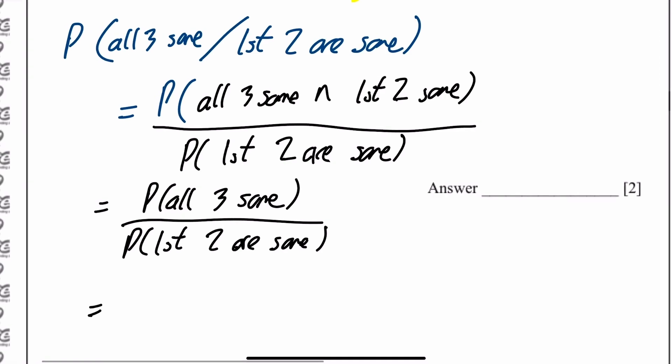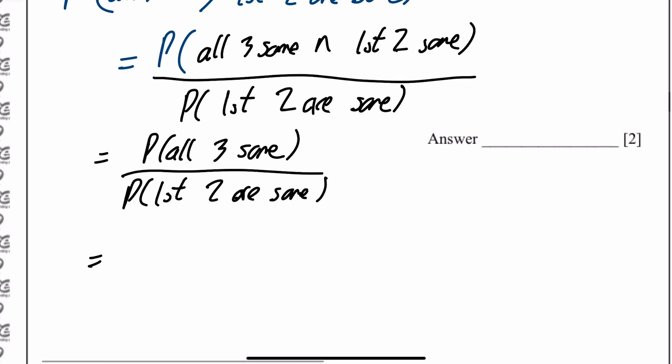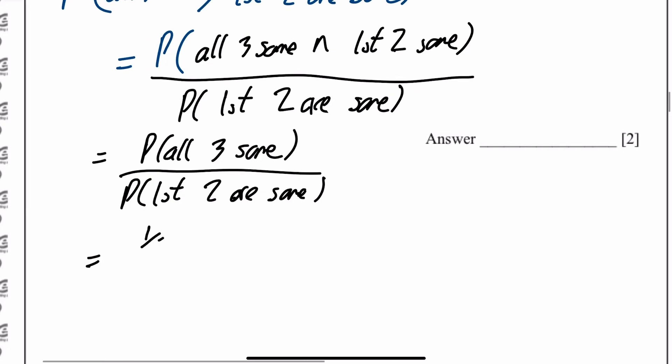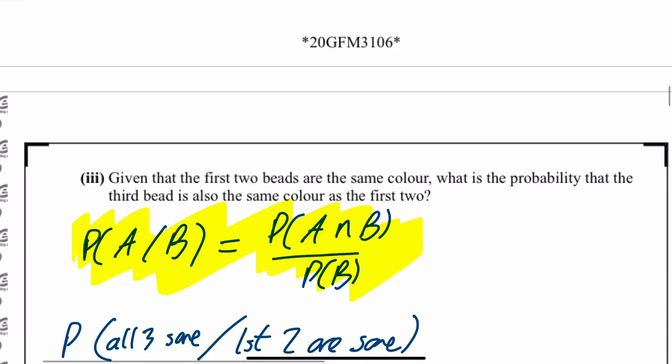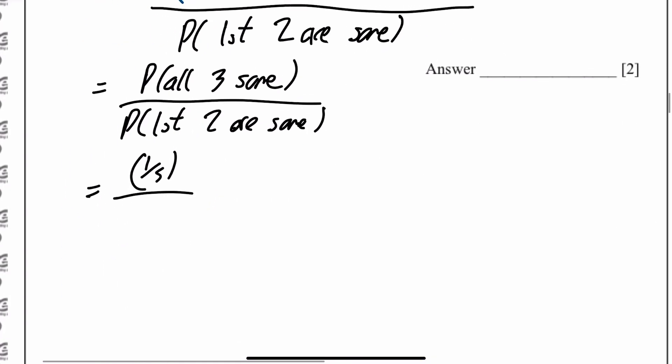So we're just going back and looking at those probabilities. The top line is one fifth, that all three are the same. And the bottom line was 7 over 15. So divided by 7 over 15. And then just do that on a calculator.